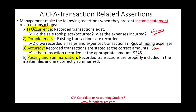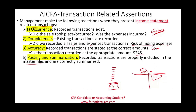Posting and summarization: recorded transactions are properly included in the master file and correctly summarized. Did we add up all the sales? When we add up all the sales, do they tie to the total? So if we add up 1.5 million in sales, is the general ledger or master file showing that number?